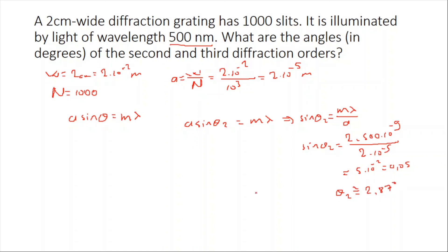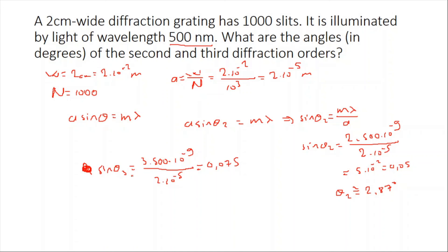Now let's look at theta three, the third diffraction order. Sine theta three equals m lambda over a, where m equals 3: sine theta three equals 3 × (500 × 10⁻⁹) divided by (2 × 10⁻⁵), which equals 0.075. Our calculator gives theta three as approximately 4.3 degrees. Thank you for listening, see you next time.